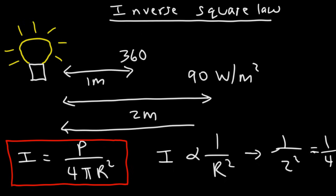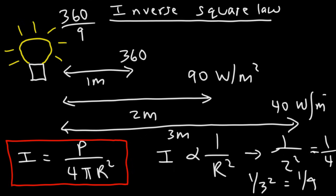Now what about 3 meters away? What will be the intensity? If we plug in a 3 into that expression, this is going to be 1 over 3 squared, which is 1 over 9. So it's going to be 9 times less than 360. So 360 divided by 9. 36 divided by 9 is 4. Add the 0, we get 40. So the intensity will be 40 watts per square meter.